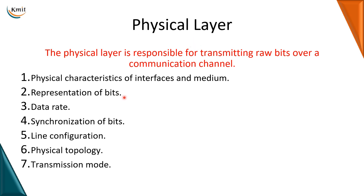Secondly, representation of bits: zeros and ones — how are they represented? They are transmitted as either electrical signals or optical signals. For electrical signals, the voltage levels representing a zero bit and a one bit are specified by the physical layer. Data rate, defined as the rate at which data is being transmitted, is also a responsibility of the physical layer.